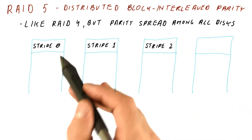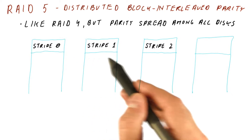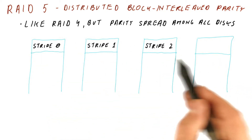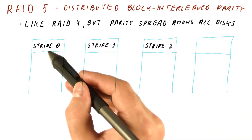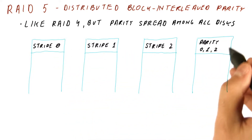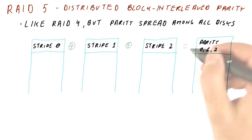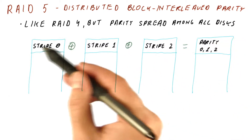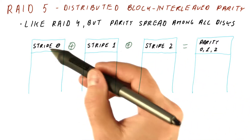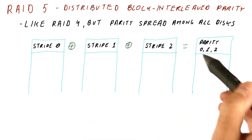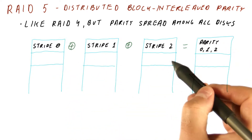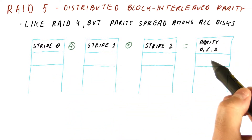So when we have four disks, the first set of stripes in RAID 5 will be exactly the same as in RAID 4. There will be three stripes of data on the first three disks, and the parity for these three stripes — which is computed by XORing the data bit by bit in the three stripes — and the resulting parity stripe is written to the fourth disk. But RAID 4 would do the same thing and put the next parity here as well.